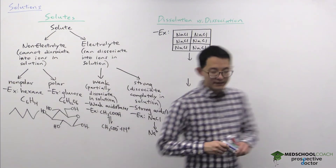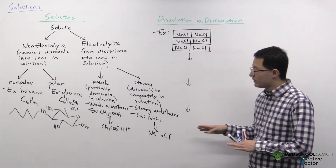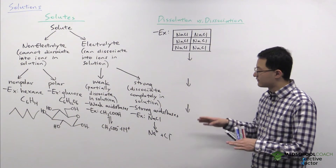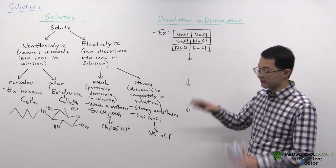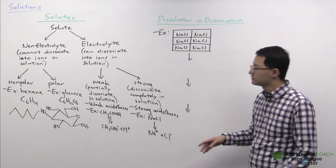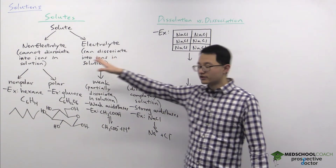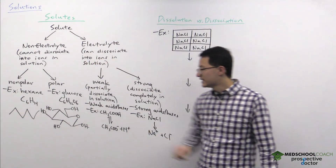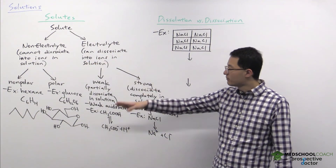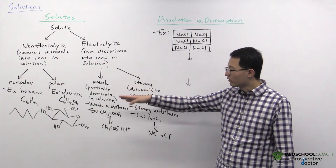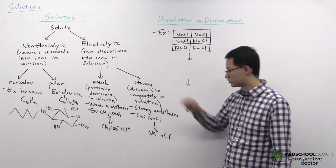So these are the different ways to classify solutes: as electrolytes or non-electrolytes, and further as non-polar, polar, weak, or strong — giving us four types of solutes.